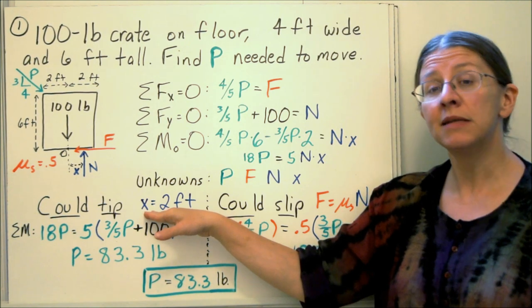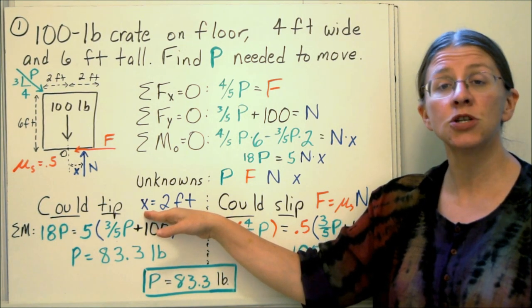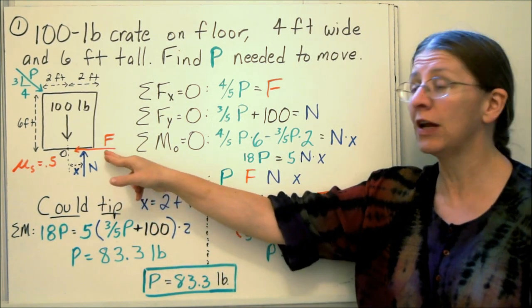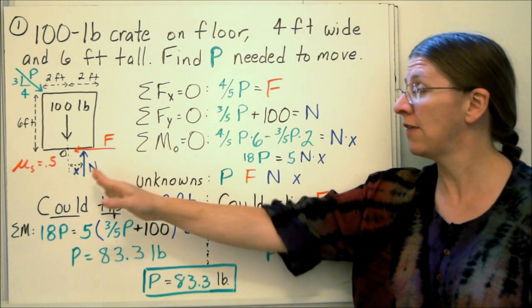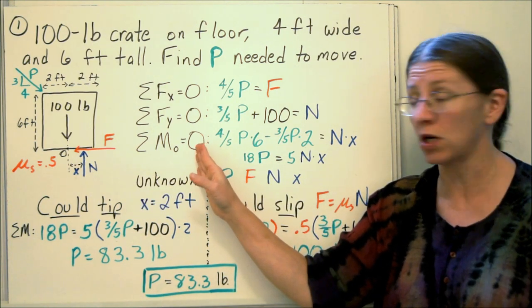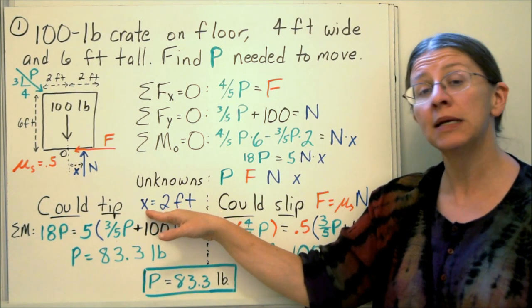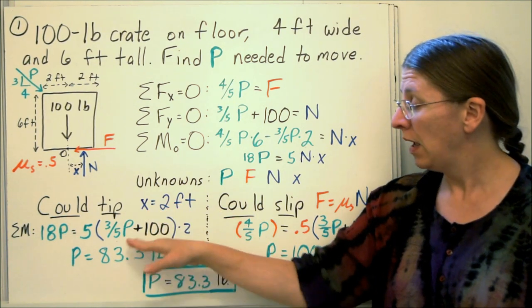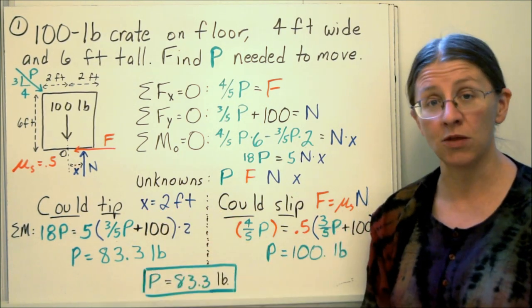So assuming only that it tips, now the tipping condition is that n has to act at the very corner of the body. If it has to act way over here to maintain equilibrium, then it's not on the object and that doesn't work. So my tipping assumption is that x equals 2. If I put that in and solve, I get p equals 83.